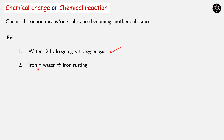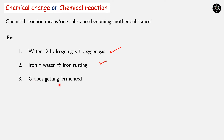In the same manner, iron when it is exposed to air and moisture will catch rust. This process is also a chemical change because rust form of iron and pure iron are two different substances. Grapes getting fermented is also a chemical change. Milk becoming curd also involves a chemical change.